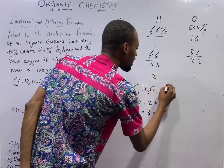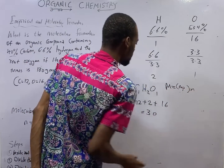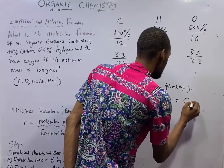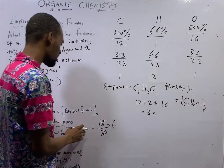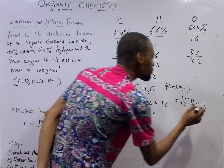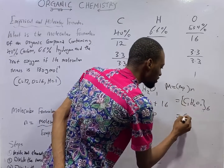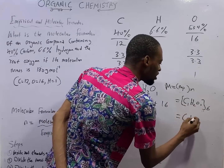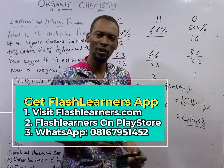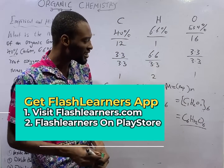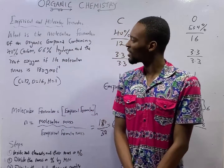Therefore, the molecular formula equals empirical formula times N. Empirical formula is CH2O, and N is 6. So: C: 1 × 6 = 6; H: 2 × 6 = 12; O: 1 × 6 = 6. The molecular formula of this compound is C6H12O6.